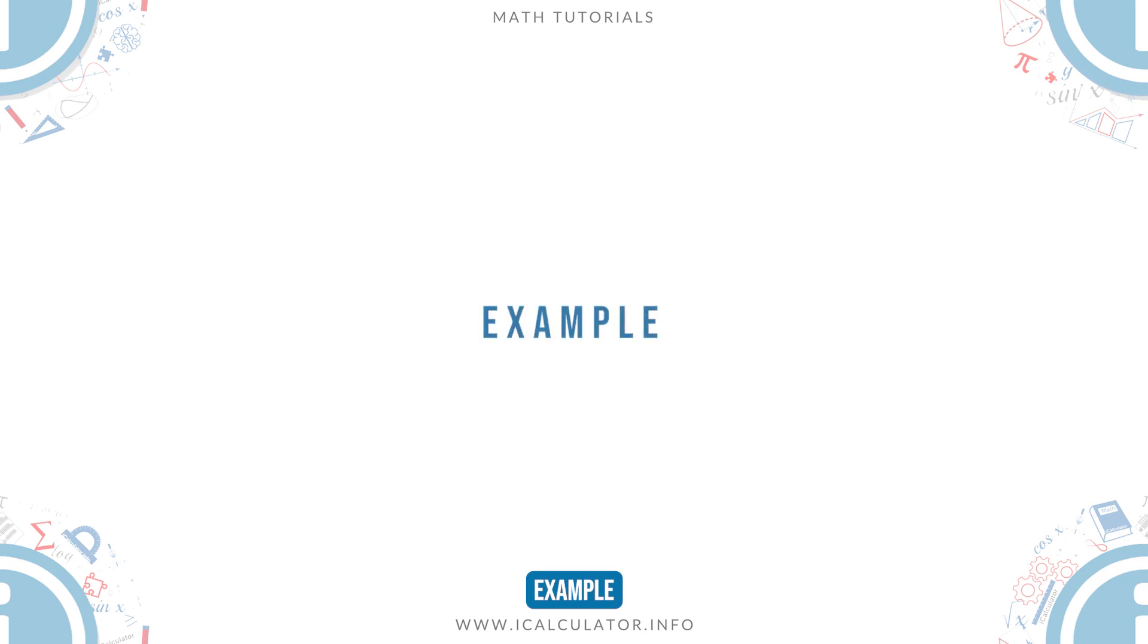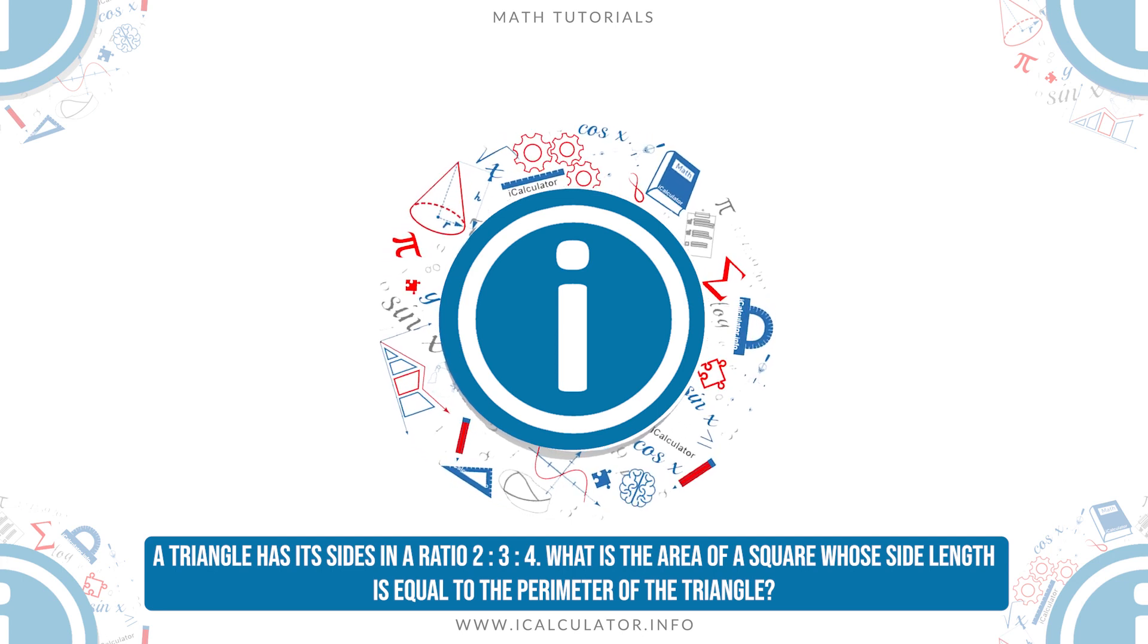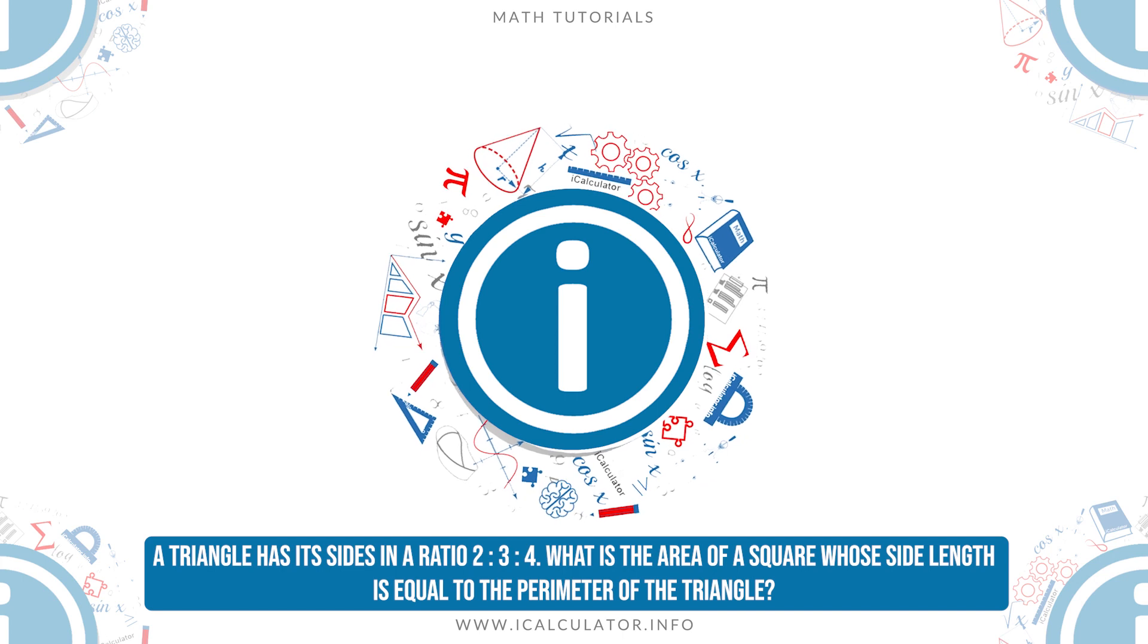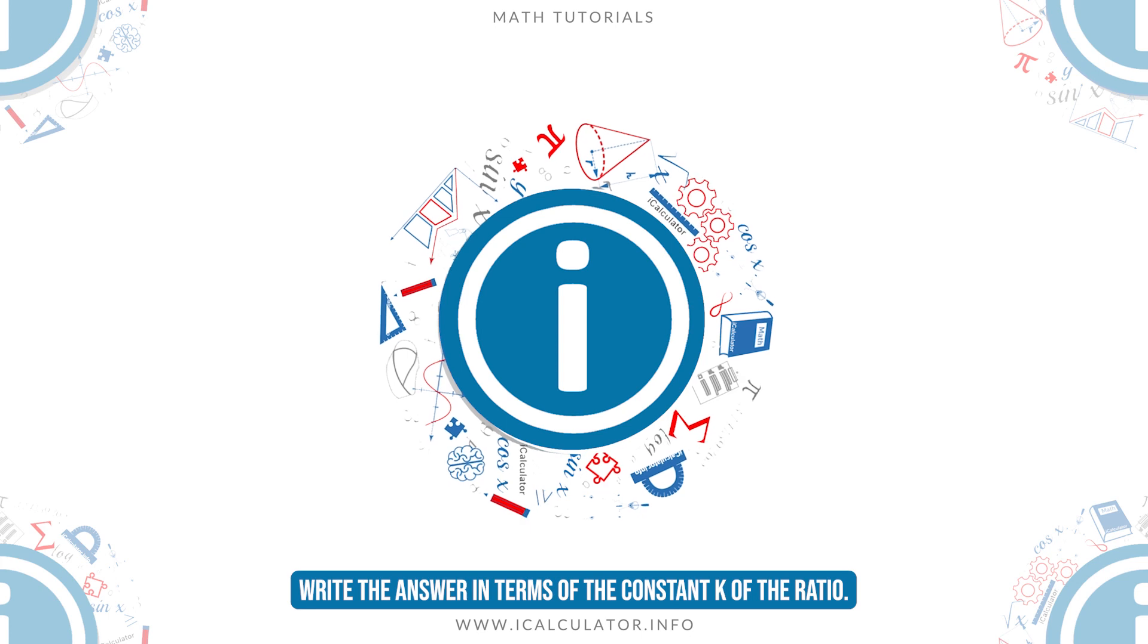Example. A triangle has its sides in a ratio 2 to 3 to 4. What is the area of a square whose side length is equal to the perimeter of the triangle? Write the answer in terms of the constant k of the ratio.